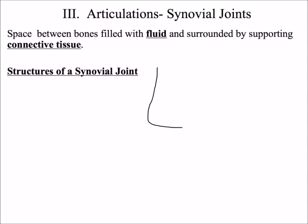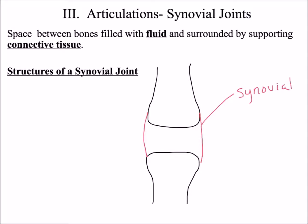The last structural classification is the synovial joint, where the space between the bones is filled with fluid and surrounding supporting connective tissue. All synovial joints share the following structures. Surrounding the two bones is the synovial membrane, whose function is to produce synovial fluid. Synovial fluid acts as a lubricant to reduce friction within the joint, along with articular cartilage, which also helps reduce friction.